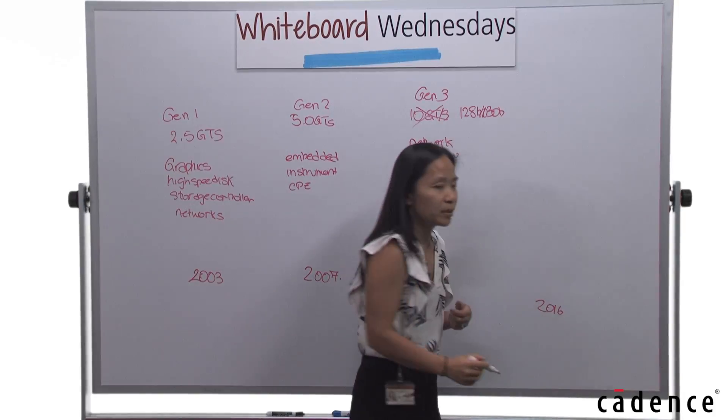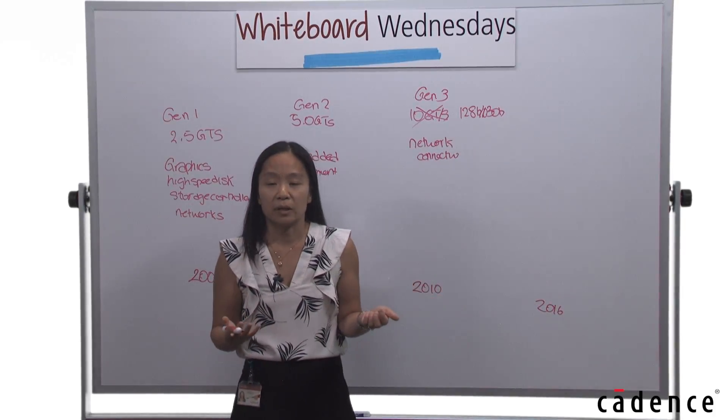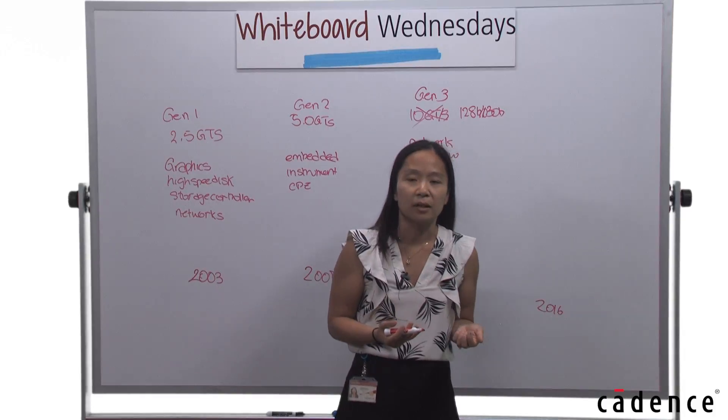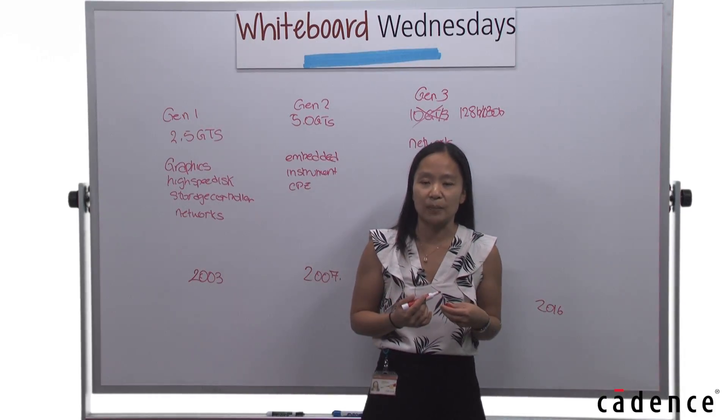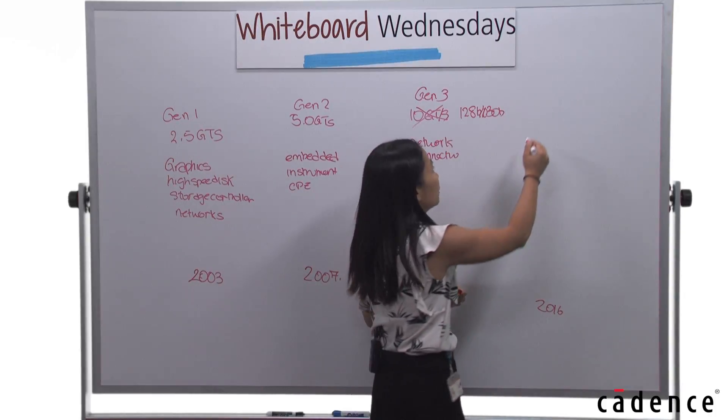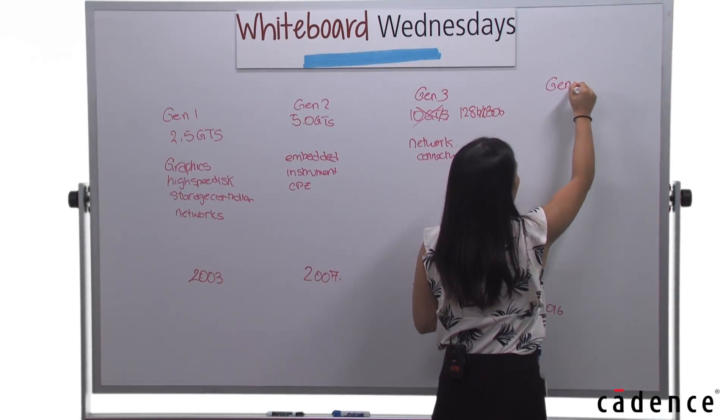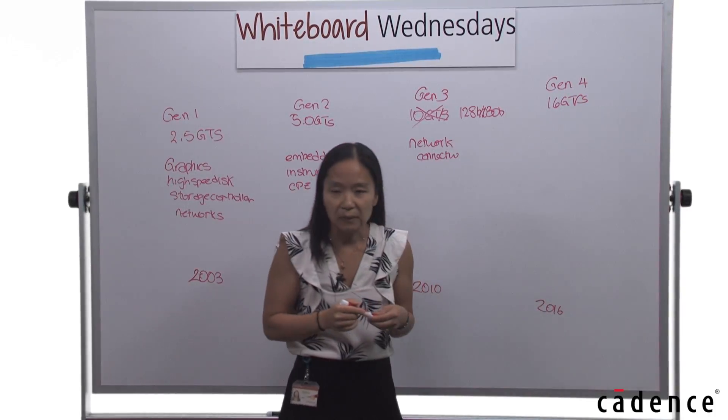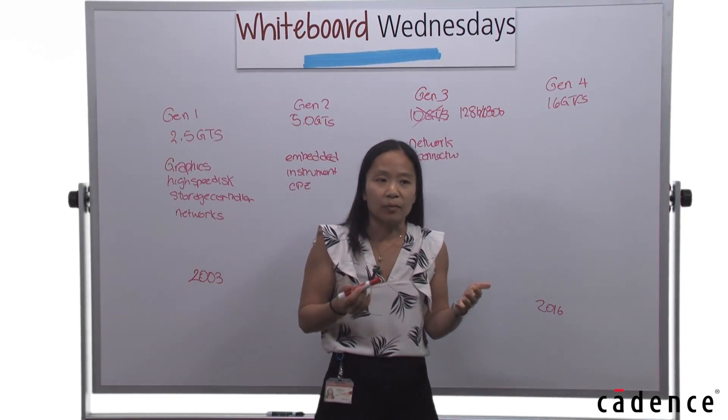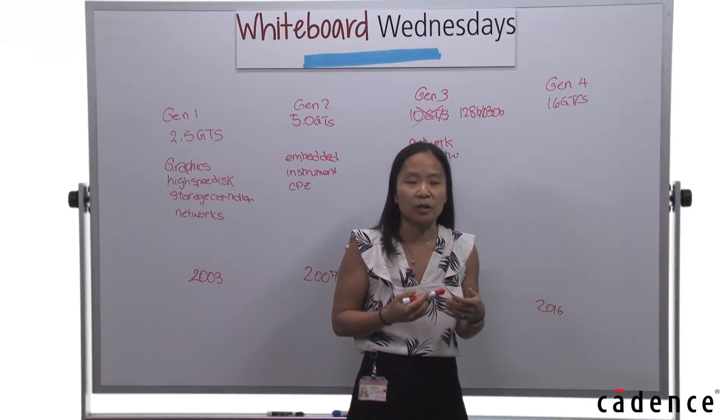Of course, we're saying, okay, 2010, four years later, we should have another generation. It's now 2016, and we're still sitting here with an unratified spec for PCIe Gen 4. What is known is that this is going to be 16 gigatransfers per second. But we have some challenges in order to meet this.